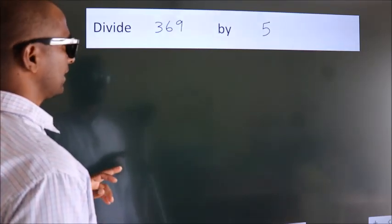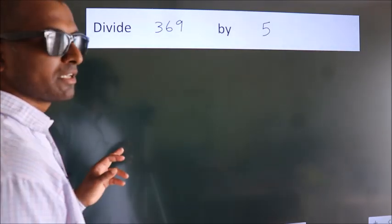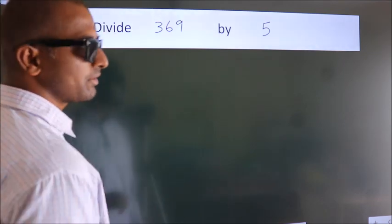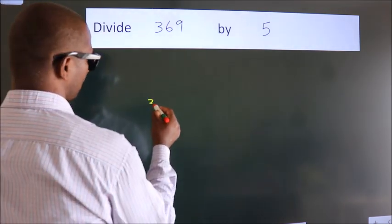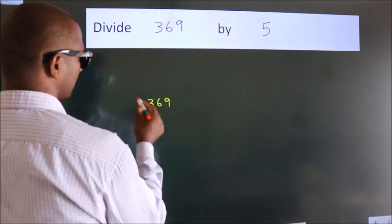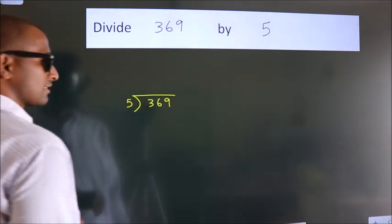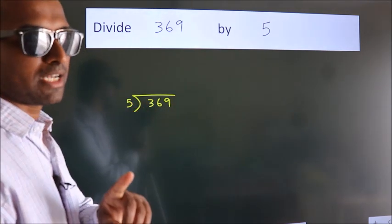Divide 369 by 5. To do this division, we should frame it in this way. 369 here, 5 here. This is your step 1.